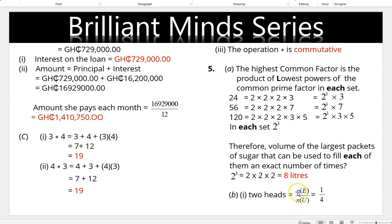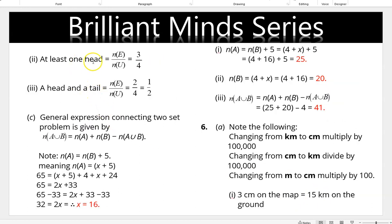For probability: two heads = number of events / number in universal set = 1/4. At least one head (one or more) = 3/4. A head and a tail = 2/4 = 1/2.